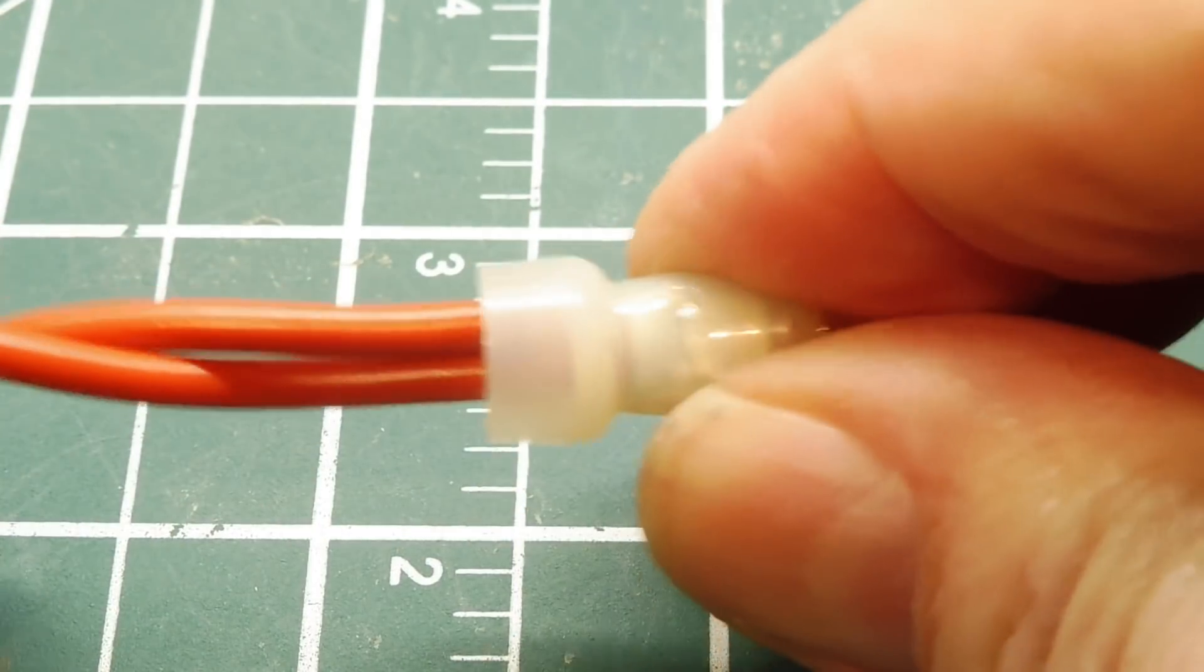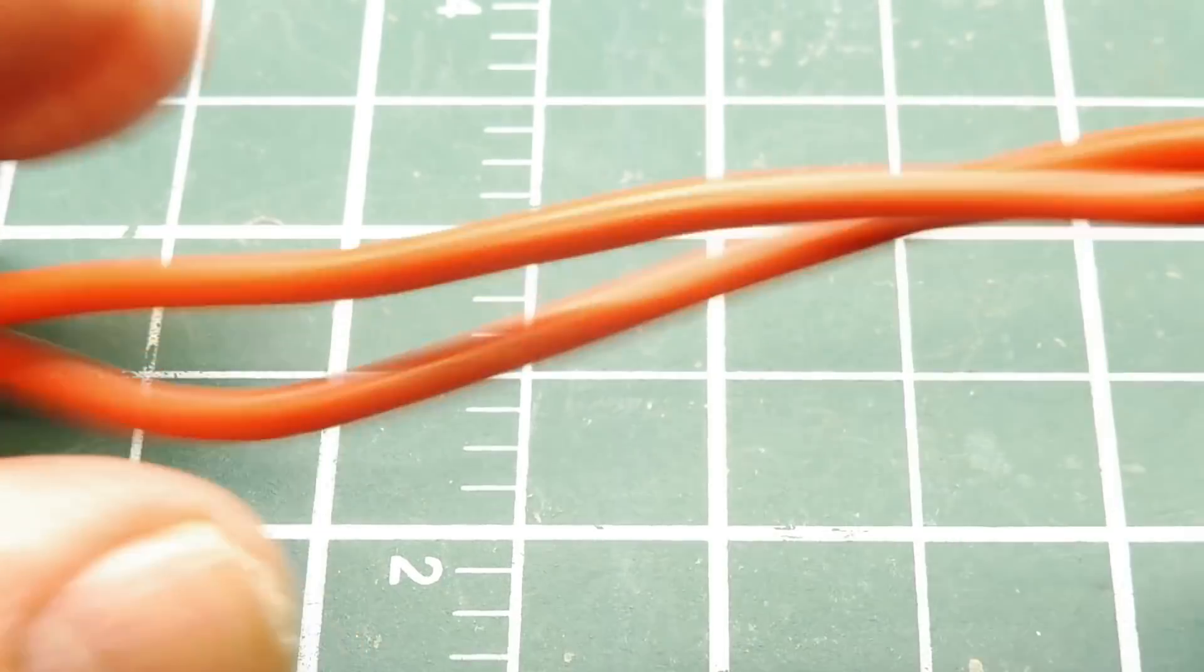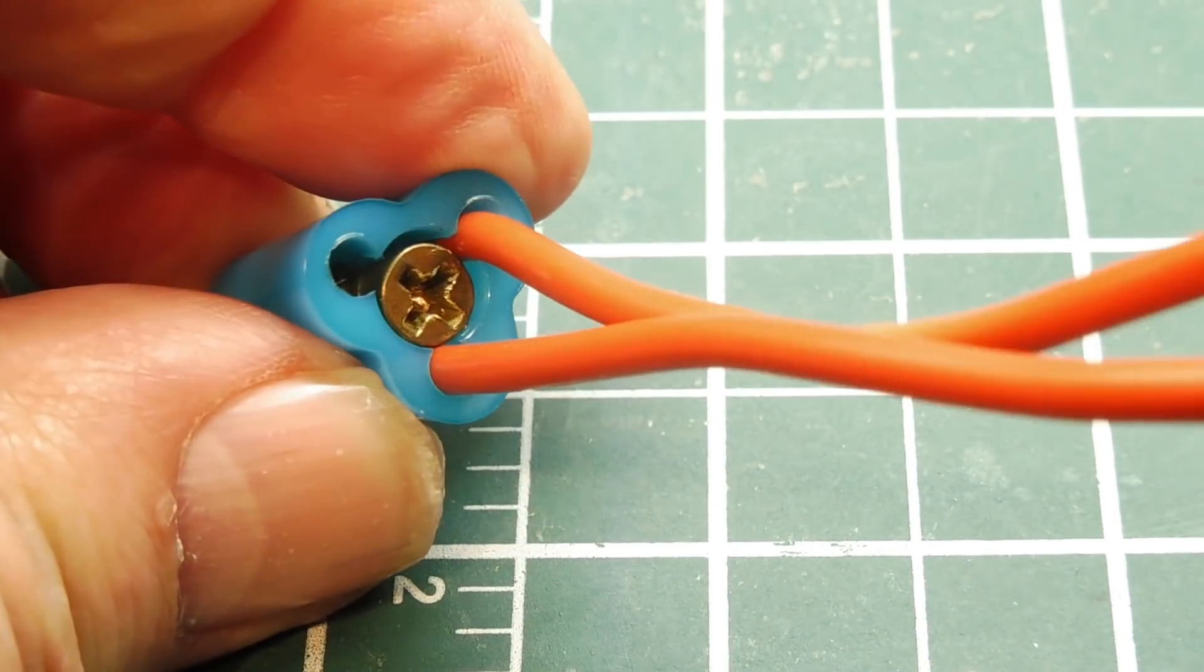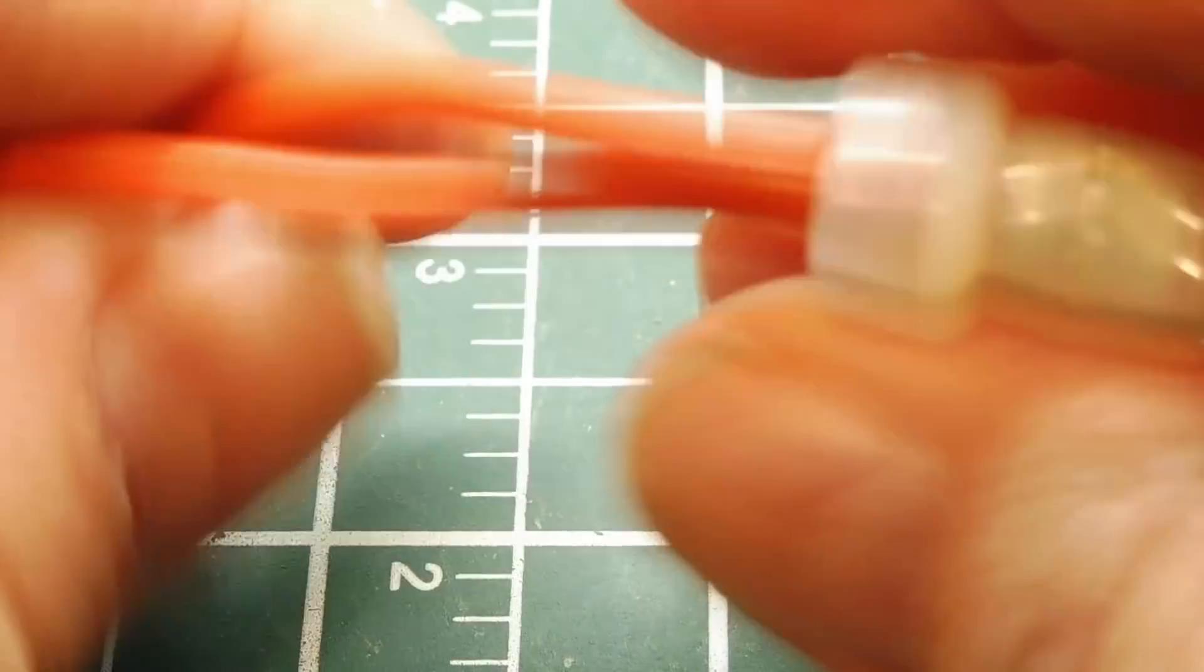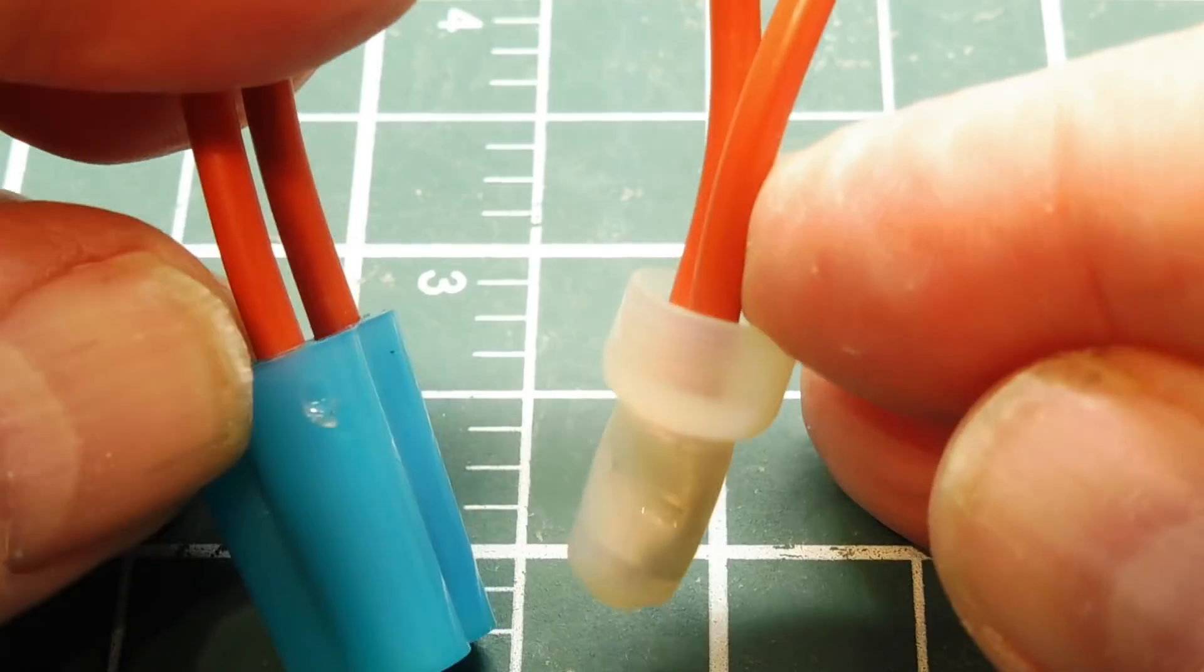There we have the two wires pigtailed together, and they're totally crimped. This is permanent. This one we can actually take apart, and we can actually pull the wires out, and we can reuse this connector. But this one is permanent. There's two ways that we can pigtail two wires together.